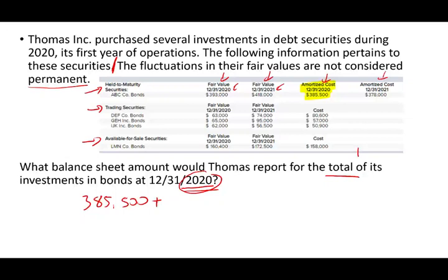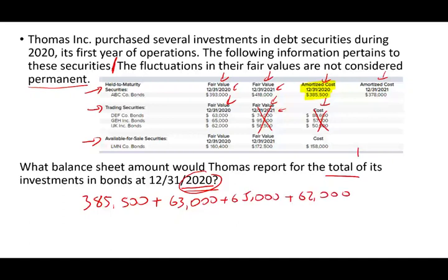Plus trading securities — again, you're given fair value for 2020, fair value for 2021, and cost. For trading securities, we don't worry about the cost and we're not looking for 2021. Therefore, we're looking for the fair value of 2020. So we're going to add 63,000, 65,000, and 62,000. Those are the fair values for the trading bonds. For available for sale — same concept — we report them at fair value, and we're looking for the 2020 fair value, not 2021. We don't care about the cost, so we add $160,400.